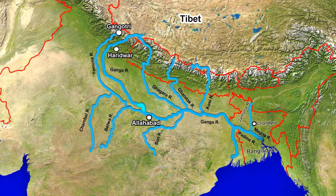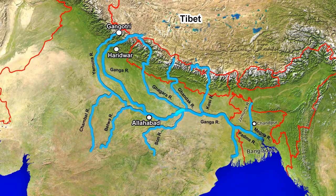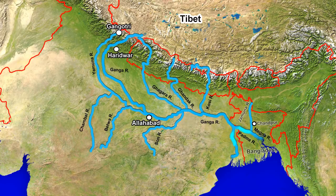From here, it flows in a south and south-east direction for a distance of 770 km to reach Allahabad. The Ganga is called Padma when it enters Bangladesh. It meets the Jamuna and retains its name, but finally meets Meghna near Chanpur and adopts the name Meghna before draining into the Bay of Bengal.